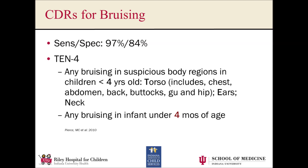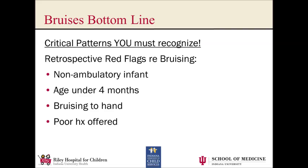Certainly something to consider. So let's summarize bruising. There are patterns that we need to be really good at recognizing and comfortable acting upon. In retrospect, for this child, we had some red flags: a non-ambulatory infant, age under 4 months, bruising to the hand, and a very poor history that was offered. In retrospect, this child deserved more of an evaluation, and we potentially could have saved this child's life.